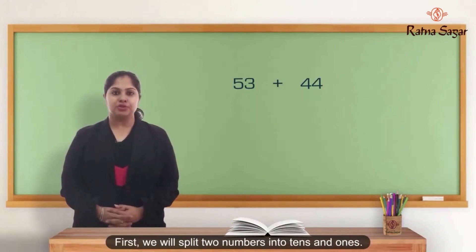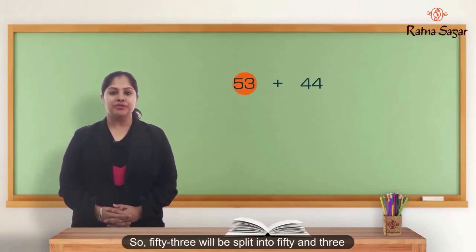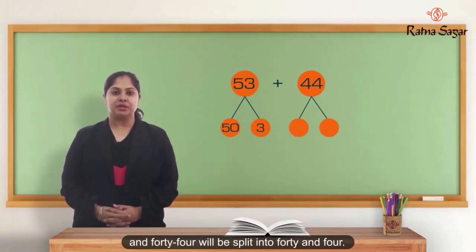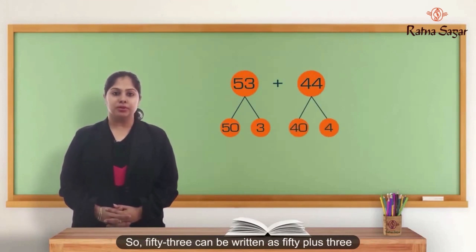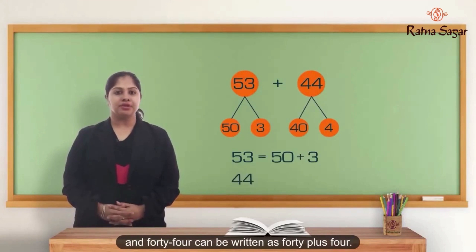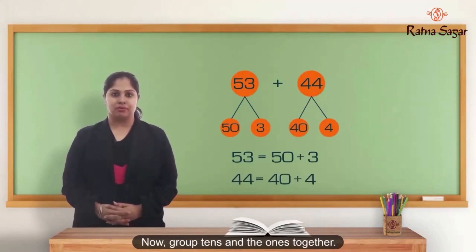First we will split the two numbers into tens and ones. So, 53 will be split into 50 and 3, and 44 will be split into 40 and 4. So, 53 can be written as 50 plus 3, and 44 can be written as 40 plus 4.